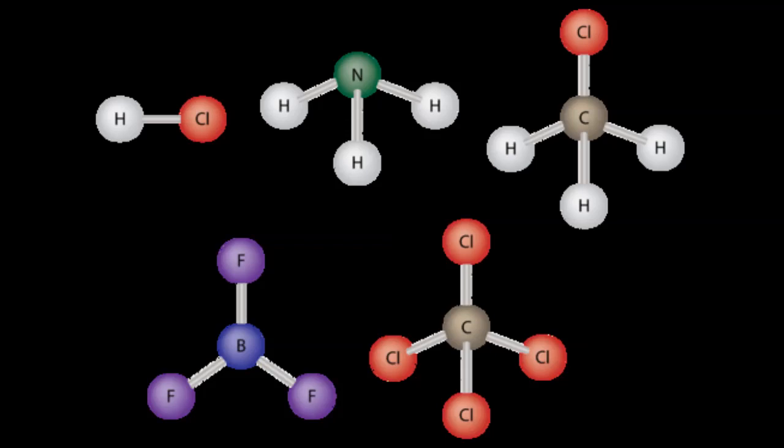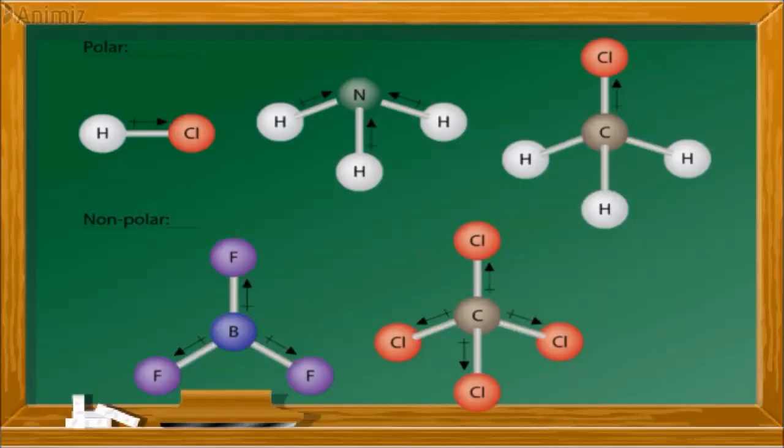So let's check out some more compounds. For example, HCl. As you can see, the bond is clearly polar because the difference in electronegativity is 3 minus 2.1, which is 0.9. It lies between 0.4 to 1.8. And also there is clear charge separation. It has dipole moment. So the molecule is polar.